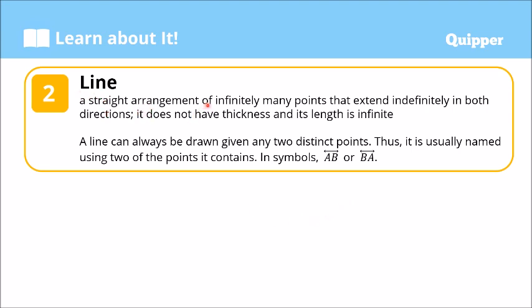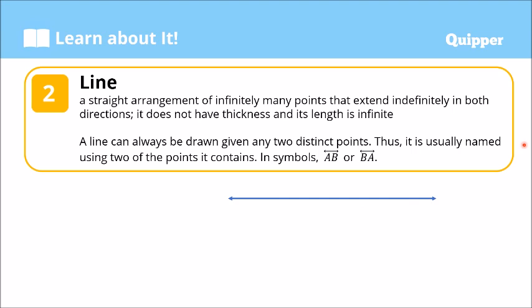The next undefined term is the line. A line is a straight arrangement of infinitely many points that extend indefinitely in both directions. It does not have thickness and its length is infinite because it extends in both directions — to the left and to the right.